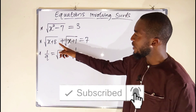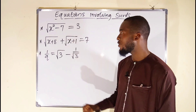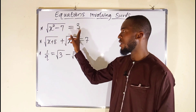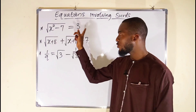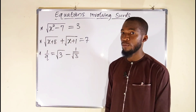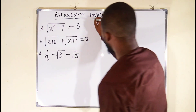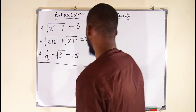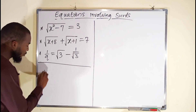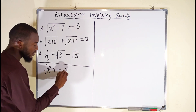We want to find in each equation the value of the unknown variable that will satisfy the original equation. You can see that the first equation is square root of x squared minus 7, equal to 3. We definitely know that the square root of 9 equals 3, so the value under the square root must equal 9. But we have to solve for it. Let's start with the first one: square root of x squared minus 7, equal to 3.